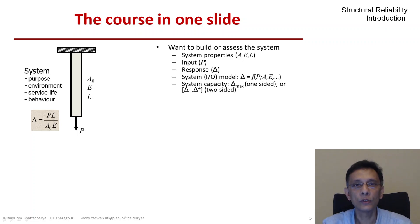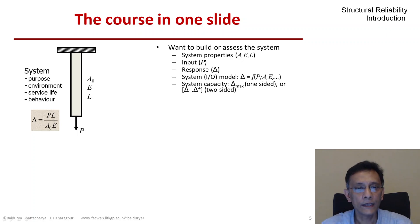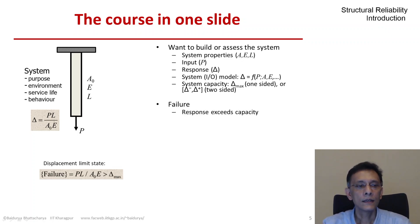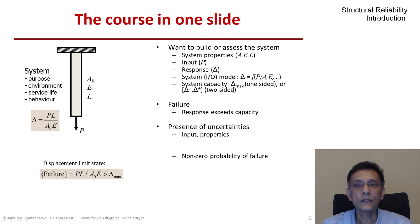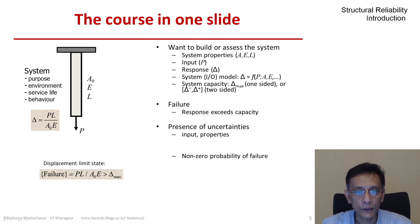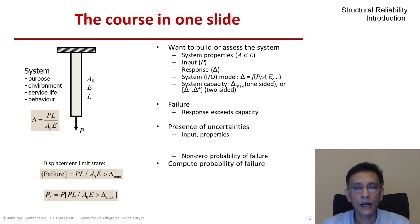I also have an idea about the system's capacity in terms of the maximum allowable response, which could either be an upper limit — one-sided — or it could be a range, which is two-sided. So if the response exceeds this acceptable range, then I have failure. Because of the uncertainties we talked about, this failure is an uncertain event, and there is a non-zero probability of failure. So if I know the randomness involved, I would like to compute the probability of failure and make sure that it is acceptably low.